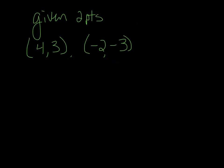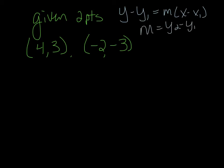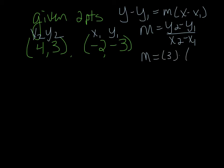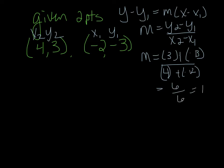Now we're given two points. We still want to use point-slope form: y minus y sub 1 equals m times x minus x sub 1. But we're missing slope, so we need to find slope first. To find slope: y sub 2 minus y sub 1 over x sub 2 minus x sub 1. I'm going to label my points, then plug in. y sub 2 is 3 minus y sub 1 is negative 3, over x sub 2 is 4 minus x sub 1 is negative 2. We get 6 over 6, which is 1. So my slope is 1.